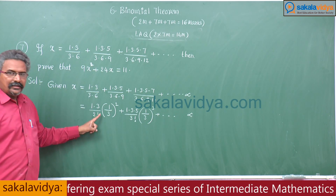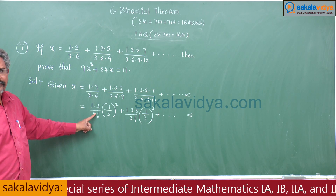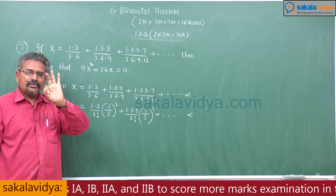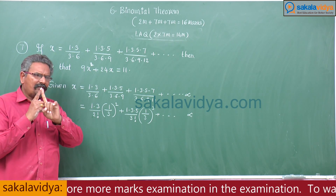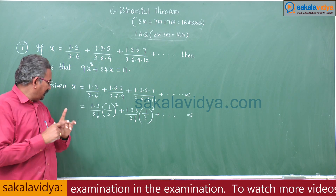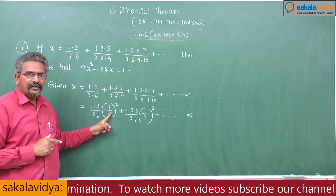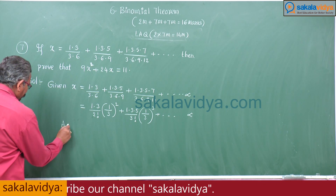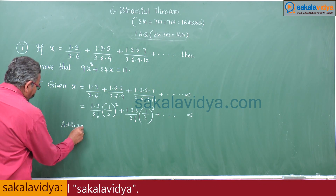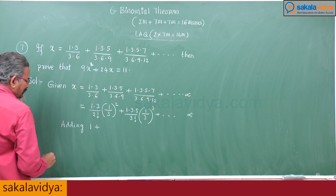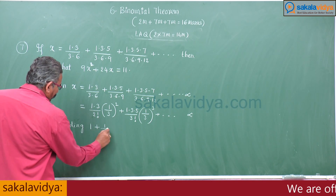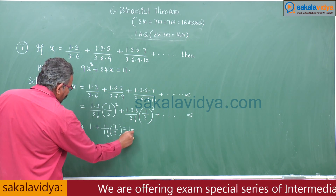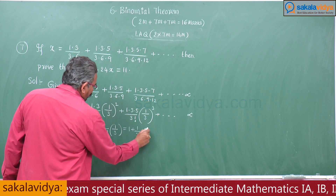This becomes the third term and this becomes the fourth term, meaning 2 terms are absent. The two missing terms are: the first term is always 1, and the second term is (1/1!) · (1/3). So those 2 are to be added. Adding: 1 + (1/1!) · (1/3), that is 1 + 1 + 1/3 on both sides.